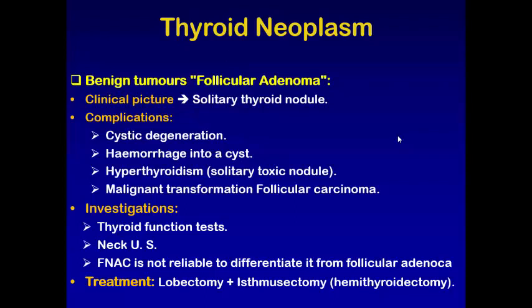The benign tumor, follicular adenoma, usually presents as a solitary thyroid nodule. Complications include cystic degeneration with hemorrhage into the cyst, conversion into a toxic nodule, or malignant transformation into follicular carcinoma. Investigations required: thyroid function tests to assess thyroid status — usually euthyroid in follicular adenoma — and neck ultrasound to visualize the nodule and determine if it is cystic or solid; it is usually solid in follicular adenoma.